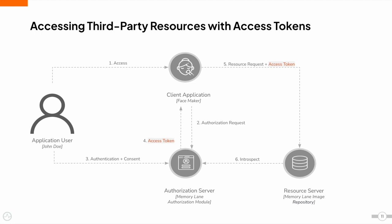Next, the Facemaker client application attempts to access the MemoryLane resources, where the access token gets passed on to the MemoryLane resource server. The MemoryLane resource server sends the access token back to the MemoryLane authorization server and gets it validated. Once the access token is validated, the MemoryLane resource server allows the Facemaker client application to access the MemoryLane resources.